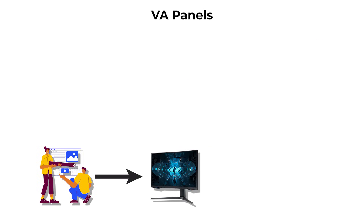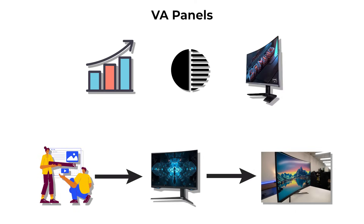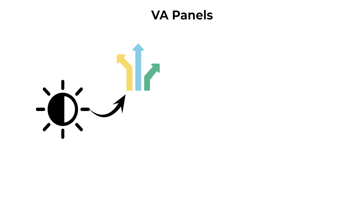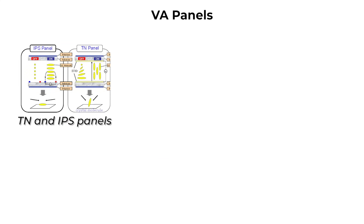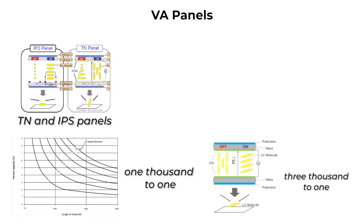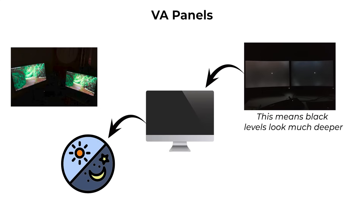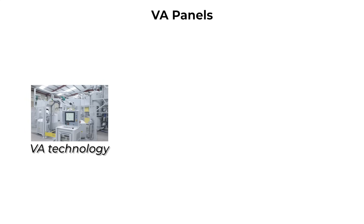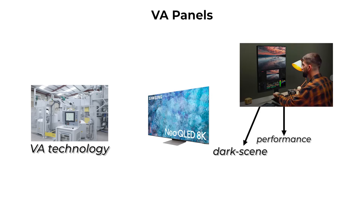This design gives VA panels one of their biggest advantages: very high native contrast ratios. Contrast ratio describes the difference between the darkest black and the brightest white the monitor can display. TN and IPS panels often have contrast ratios around 1000 to 1, while VA panels commonly reach 3000 to 1 or higher. This means black levels look much deeper, and scenes with shadows or night settings appear more realistic. This is one of the reasons VA technology is often used in televisions, where dark scene performance is especially important.